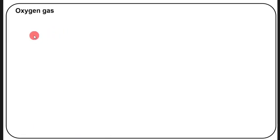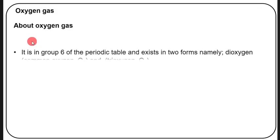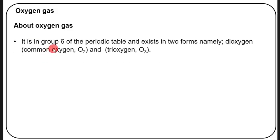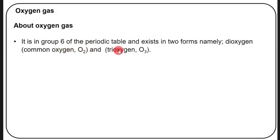Oxygen is in group six of the periodic table and exists in two forms: dioxygen, which is the common oxygen with formula O₂, and trioxygen O₃ — also called ozone.